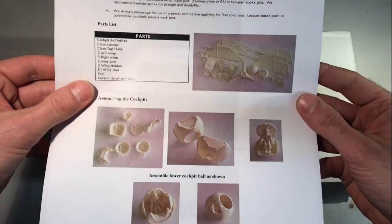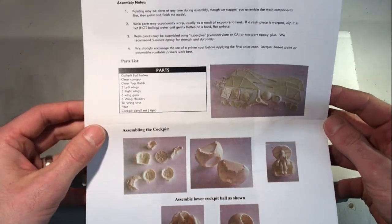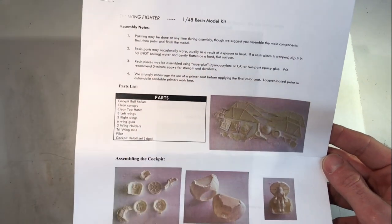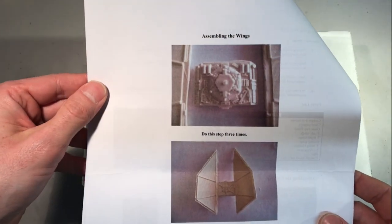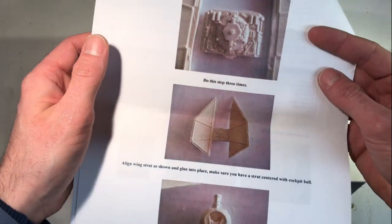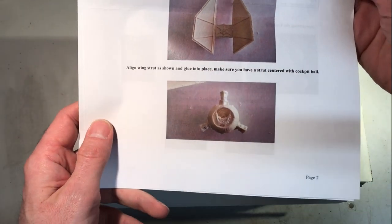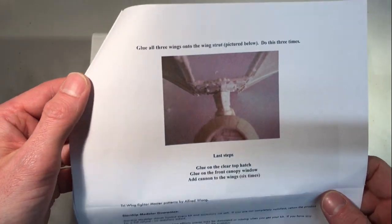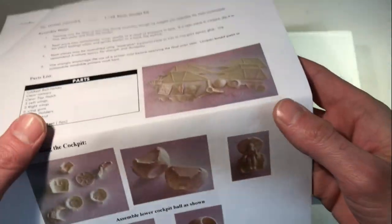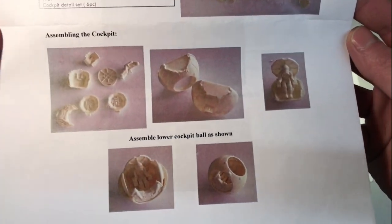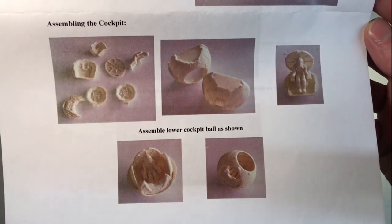First the instructions, we have well detailed instructions showing all of the parts, some assembly notes including information about paint and resin parts. We can see that the step-by-step is explained in the photos and that it's really a short step-by-step. Most of the pictures are about the cockpit assembly.